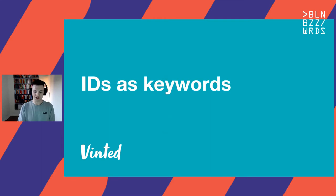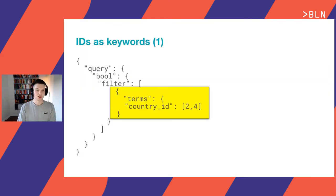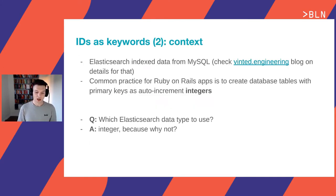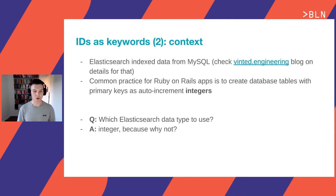One of the easiest tricks is to store your IDs as keywords in Elasticsearch. When I talk about keywords as IDs, I mean if you have simple boolean queries with filters on attributes that hold IDs — for example, filtering on a country ID for countries 2 and 4 — you can apply this optimization. At Vinted, Elasticsearch data comes from MySQL, which is the primary data store. A common practice for Ruby on Rails applications is to create database tables with primary keys as auto-increment integers.